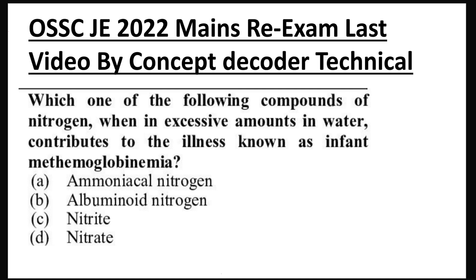What is the following compound of nitrogen? When an excessive amount is present in water, it contributes to a condition known as infant methemoglobinemia. The nitrate is a form of nitrogen; in water, it should not be greater than 45 mg per liter. This concentration limit is also important.